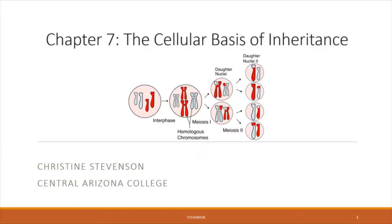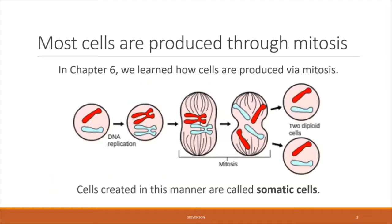Hi everyone, and welcome to Chapter 7, The Cellular Basis of Inheritance. This is a lecture that goes hand-in-hand with our last lecture, Chapter 6, wherein we learned about the process of mitosis, which is how most eukaryotic cells are produced.